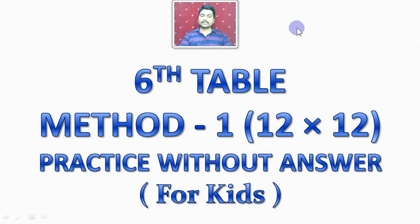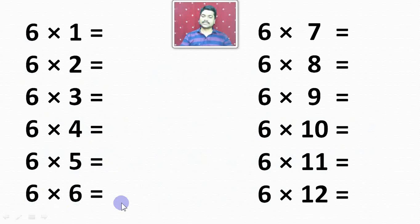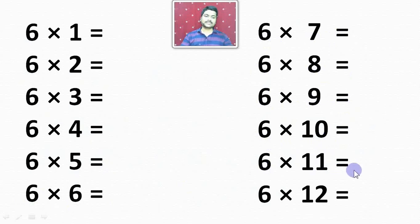6th Table Method 1 Practice without Answer. 6 1's are 6. 6 2's are 12. 6 3's are 18. 6 4's are 24. 6 5's are 30. 6 6's are 36. 6 7's are 42. 6 8's are 48. 6 9's are 54. 6 10's are 60. 6 11's are 66. 6 12's are 72.